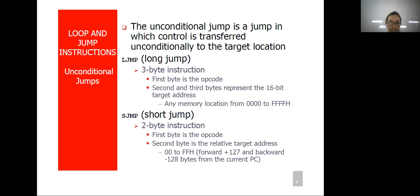Now short jump: AJMP is a short jump instruction, which is a 2-byte instruction. The first byte is the opcode and the second byte is the relative target address. The target address is only 8-bit, compared to long jump where the target address was 16-bit. The range for short jump is plus 127 to minus 128 bytes.